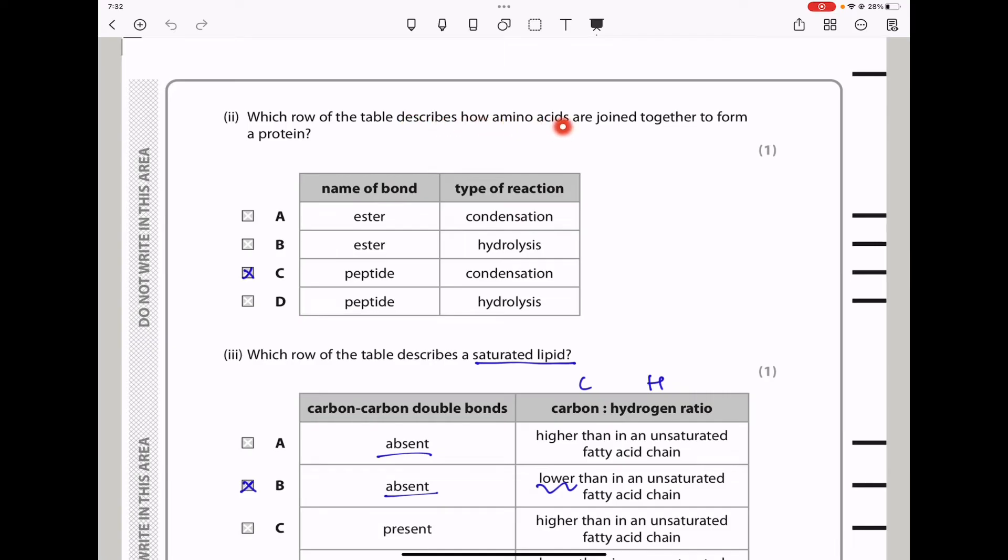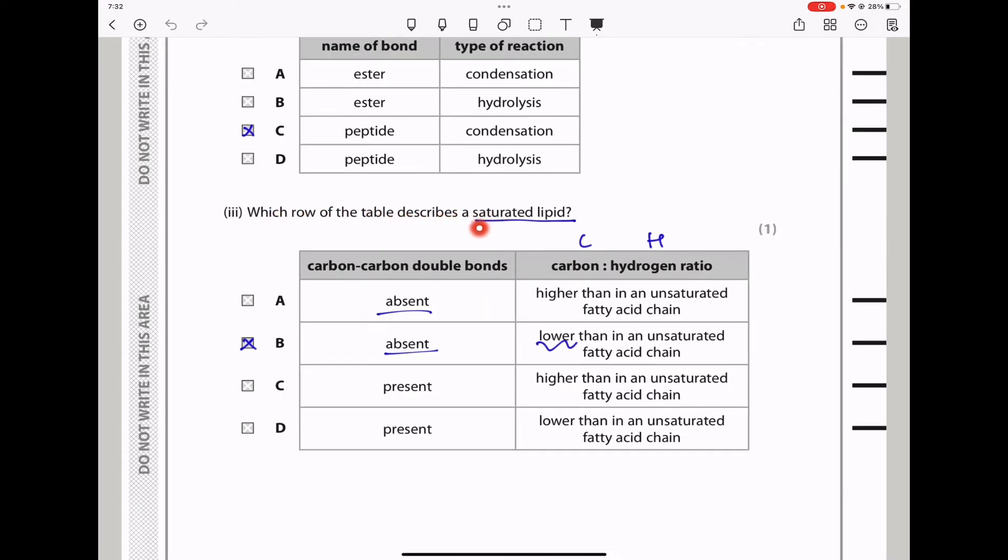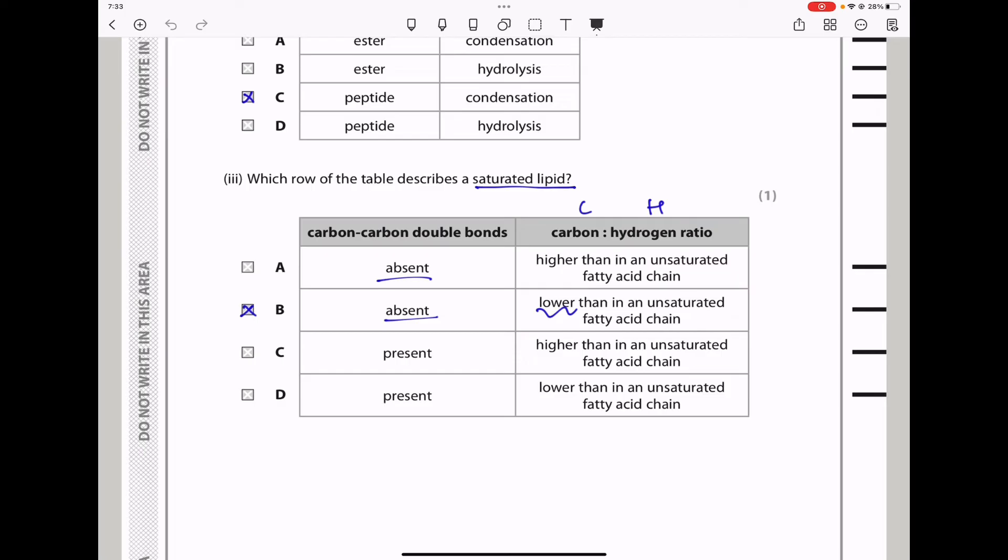Which row of the table describes how amino acids are joined together to form a protein? Amino acids are joined together through a condensation reaction and a peptide bond is formed. Condensation reactions involve, in this case, loss of water. So the suitable answer here should be C. Here they say which row of the table describes a saturated lipid. When they say saturated, it means it has no carbon-carbon double bond. And then they say carbon-to-hydrogen ratio. This should be lower than in unsaturated fatty acids because saturated fatty acids have more hydrogen. So the carbon-to-hydrogen ratio should be lower and therefore the answer should be B.